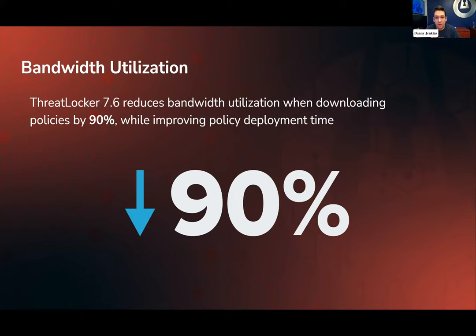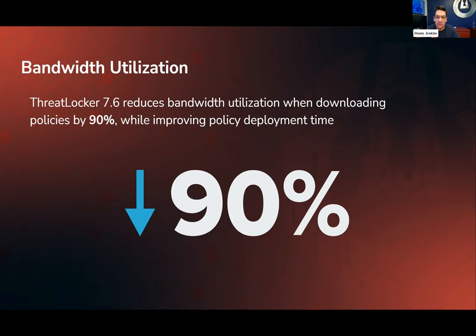Up until now, ThreatLocker has always downloaded policy sets in their entirety. So when you deploy policies or permit new software, ThreatLocker's agent would go off and download the entire new version of policies. They no longer have to do that — our policies are now downloading incrementally. In our lab and test environments, we've managed to reduce the bandwidth utilization by over 90% on ThreatLocker. Not only is it saving bandwidth, it's going to help with policy deployment times. If you had a slow internet connection and had to download your entire policy set, now it only has to download the delta of those changes. It also makes our data centers perform better, our APIs perform faster, and our UI perform faster as more people get onto 7.6.